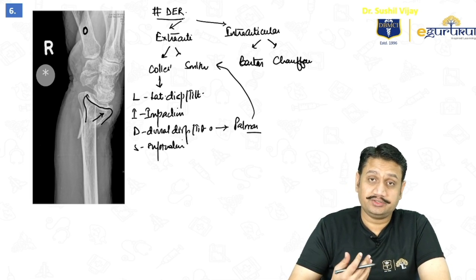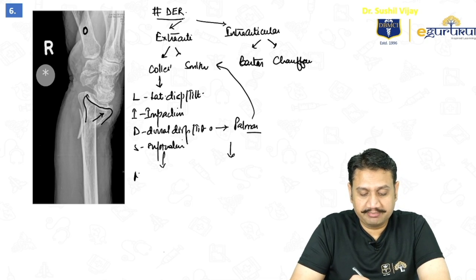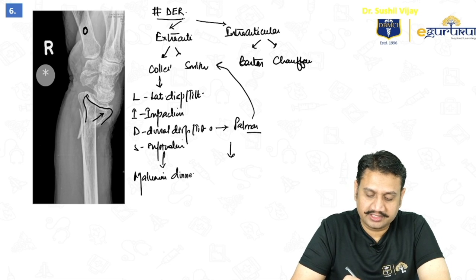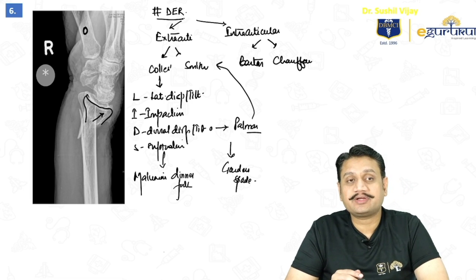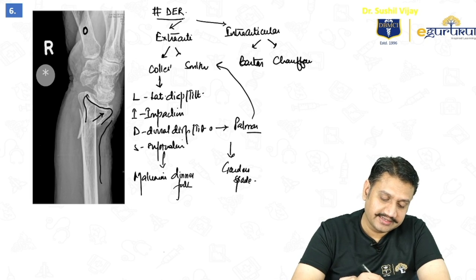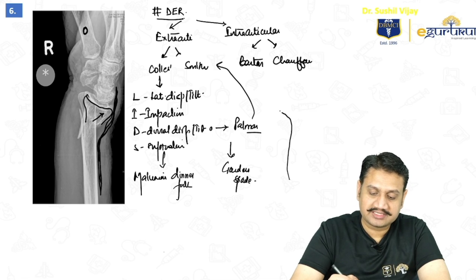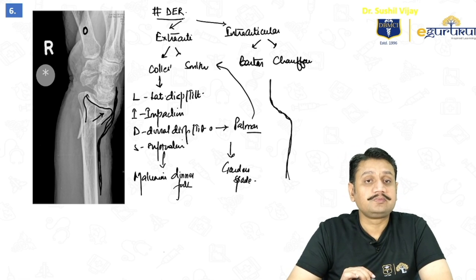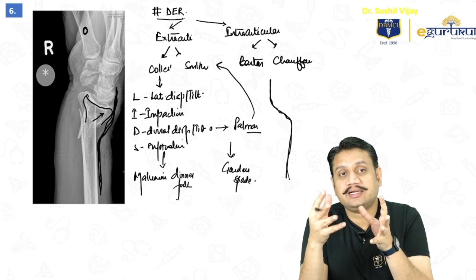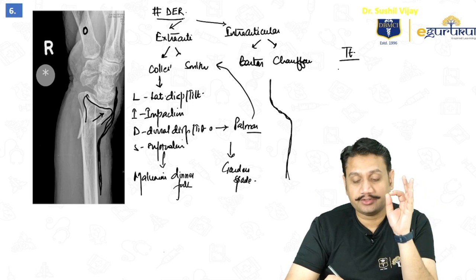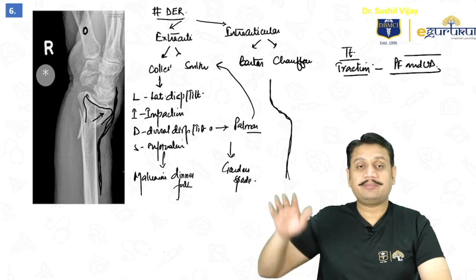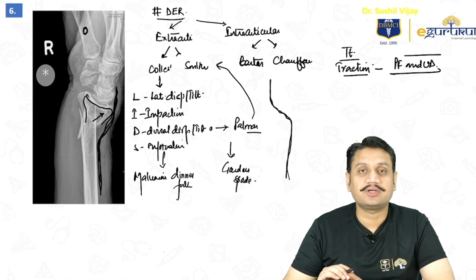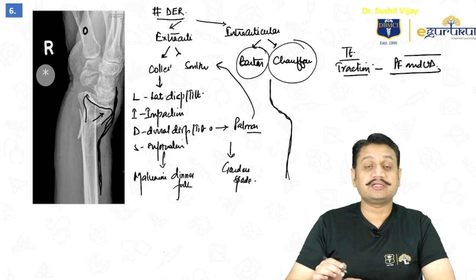Being highly vascular cancellous areas, these fractures usually unite, so the main complication is malunion. Malunion in Colles produces a 'dinner fork' deformity; in Smith, a 'garden spade' deformity — caused by dorsal or palmar displacement of the fragment respectively. Treatment is always conservative: first traction, then plaster applied in palmar flexion and ulnar deviation — the 'handshake position.' Barton and Chauffeur, being intraarticular injuries, most often require surgical fixation.